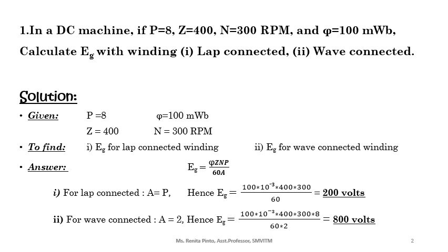In a DC machine, if P is equal to 8, Z equal to 400, N is equal to 300 RPM, and Phi is equal to 100 mW. Calculate EG with winding lap connected and wave connected.